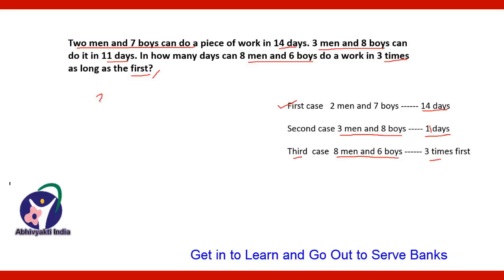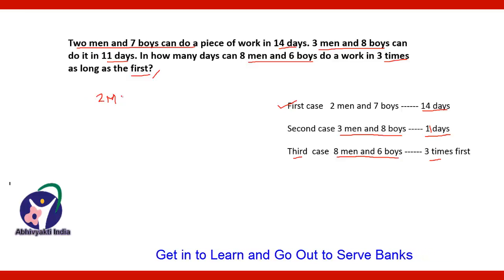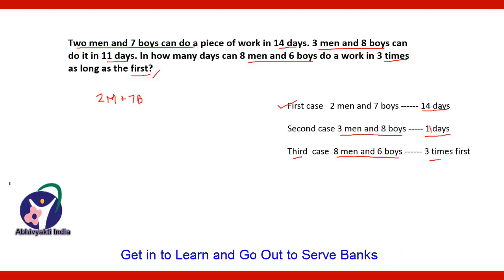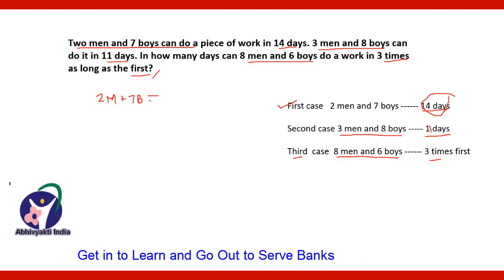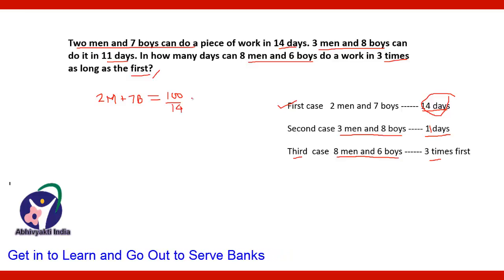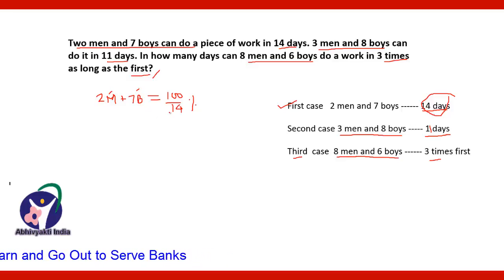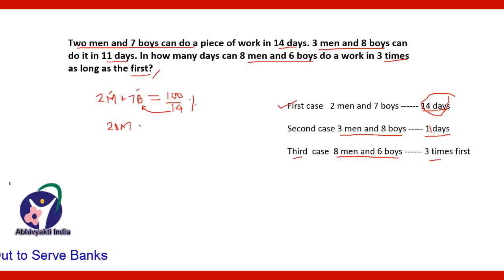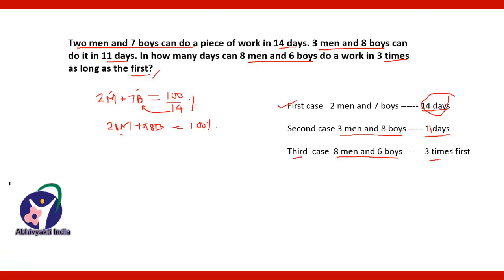In the first case, 2 men and 7 boys are working and they finish the work in 14 days, so in 1 day they will complete 100/14% of the work. If you multiply both sides by 14, you get 28 men + 98 boys = 100% work. This means 28 men and 98 boys together will complete 100% of the work in 1 day.